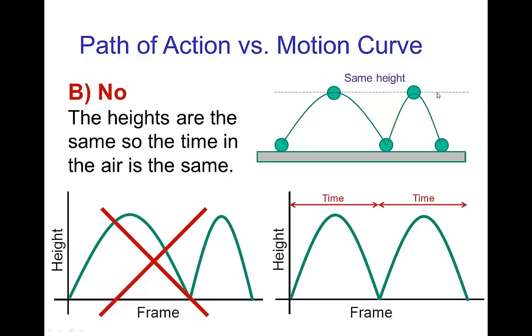and so, because these two go up to the same height, they have to be in the air for the same amount of time, so these two have to be duplicates. Now the motion curve for the horizontal position on each frame will be different for the first bounce than the second bounce, but not the motion curve for the height.